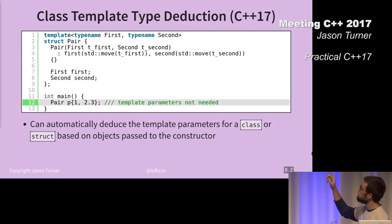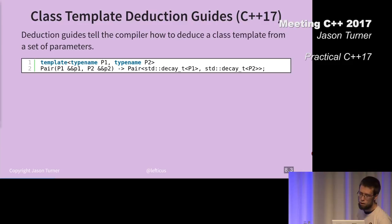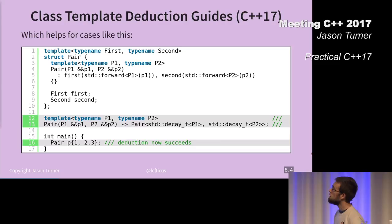I've now made a more complicated constructor for my pair class that takes two parameters by forwarding reference. These can be anything. So we need to add a deduction guide. On lines 12 and 13, this is the deduction guide saying whatever you pass in to me, I want you to decay it. And then I want that to be the template parameters.